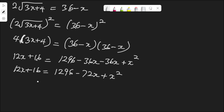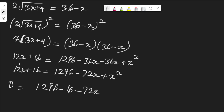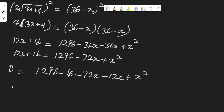This gives us a quadratic equation. Let me move everything to one side. Moving 12s and 16 across: 1296 minus 16 is 1280, then negative 72s minus 12s gives negative 84s, plus s squared, all equal to 0.